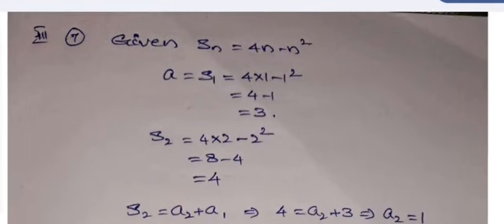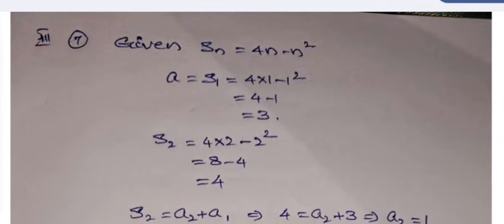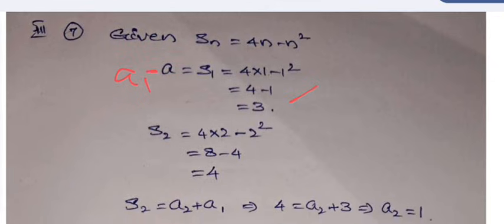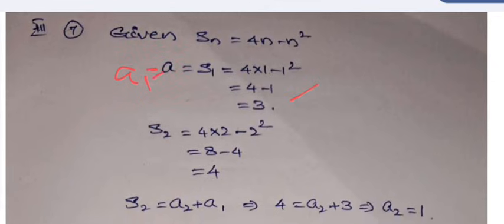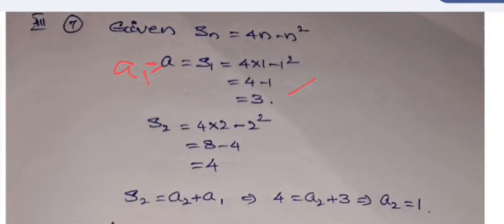7th problem: Given Sₙ is equal to 4n minus n square. To get the first term, just we have to put n is equal to 1. So n is equal to 1 is substituted and S₁ is 3, so it is S₁ or a, and even this a is also called a₁. S₂ is required to find, sum of first two terms.